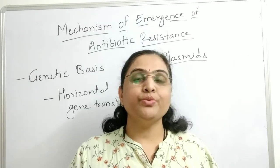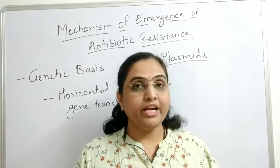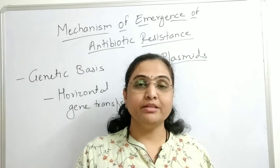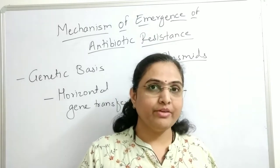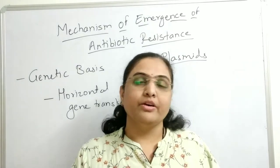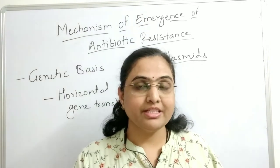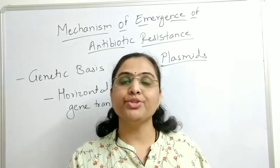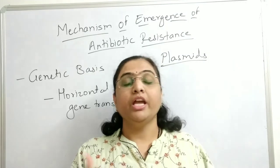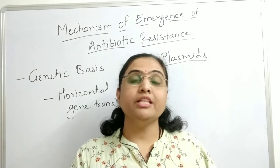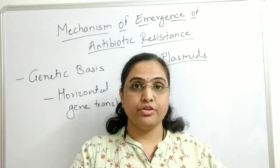Welcome. From the last videos we are learning about the mechanism of emergence of antibiotic resistance. We have learned that there are two types of mechanisms: the genetic basis and the mechanistic basis. In the genetic basis we are learning about horizontal gene transfer, in which we have learned about integrons — their structure, how they spread, and the classes of integrons.